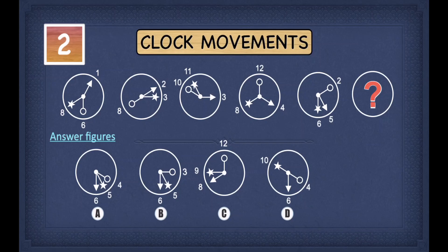Now let's have a look at a clock movements example. In these types of examples, the first thing we have to do is look at the types of hands we have. In this example, we have three types: an arrow, a circle with its middle not filled, and a star.